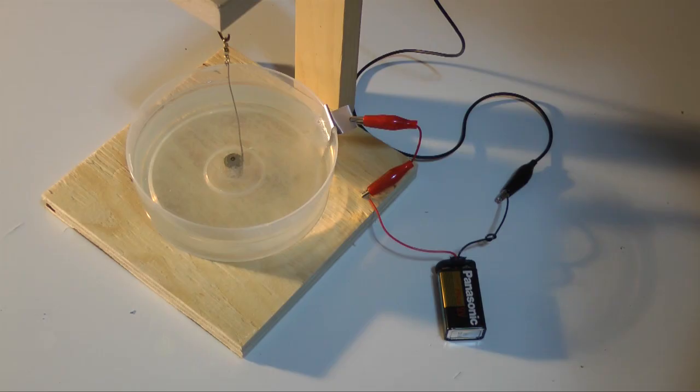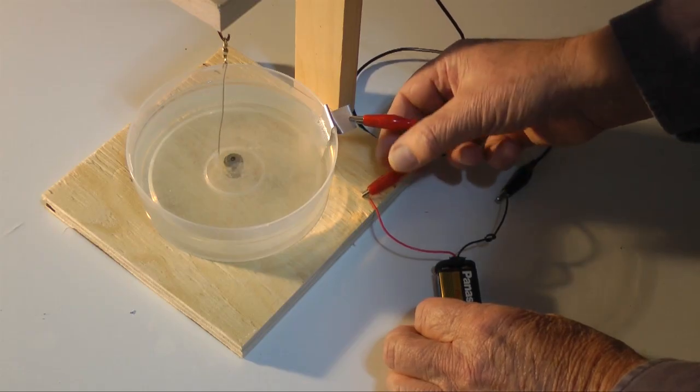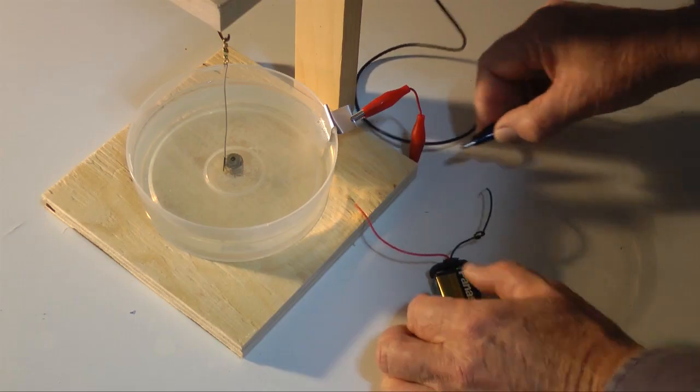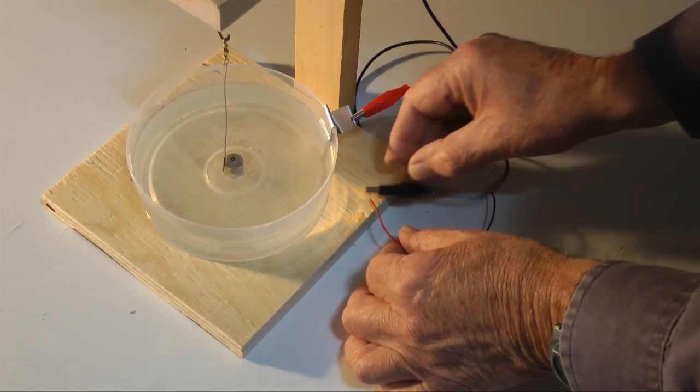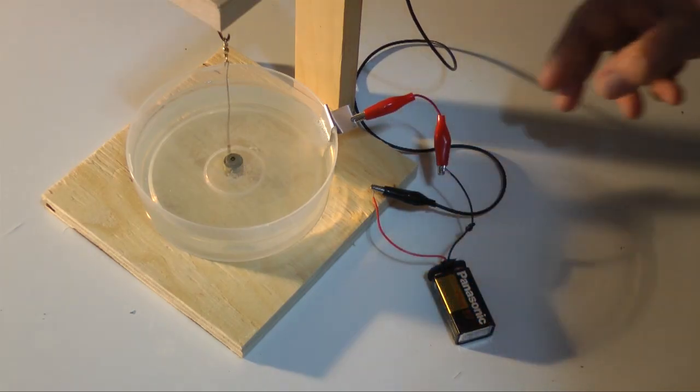Reversing the battery connections reverses the motion. The wire is rotating clockwise around the magnets. I'll disconnect the battery and reverse connections. The motor now rotates counterclockwise.